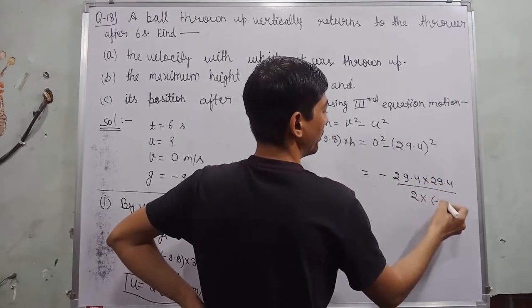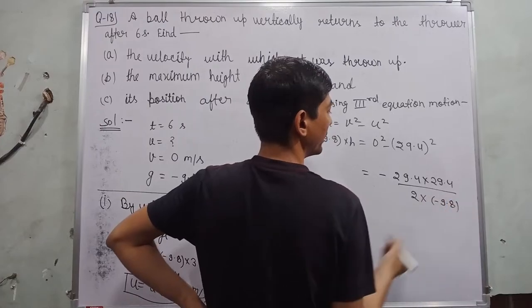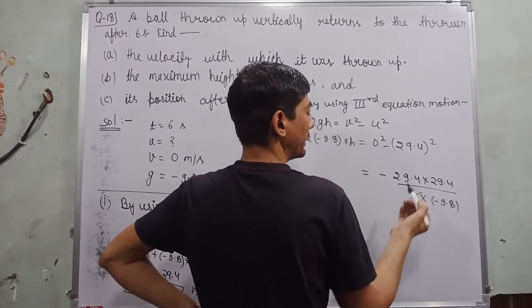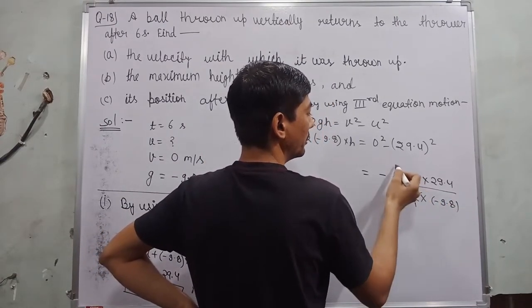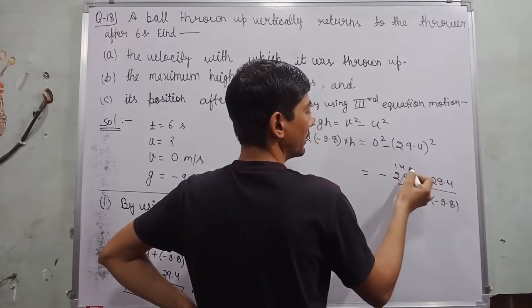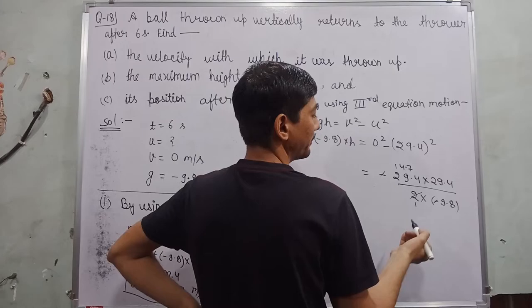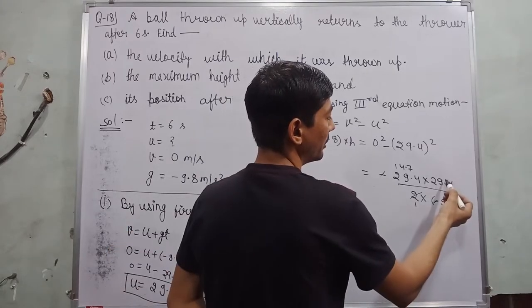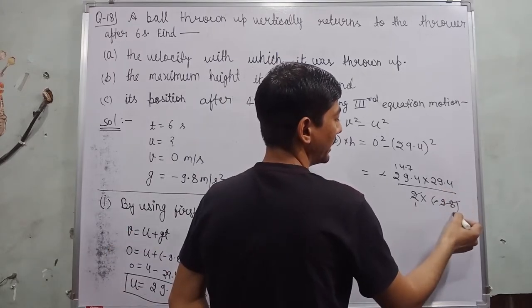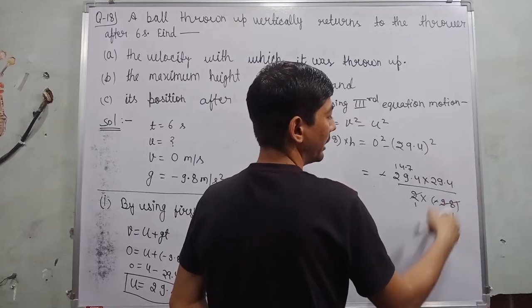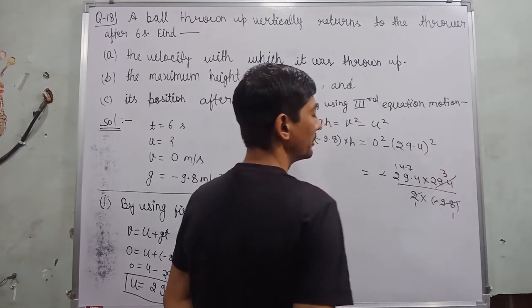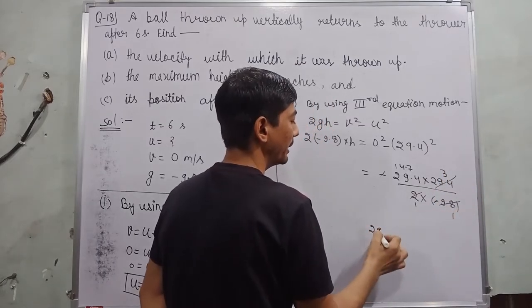over 2 into minus 9.8. So I cancel out 202 202 202 248 274 and this minus sign cancel out by this minus sign. This 9.8 cancel out by it by three times, 9.8 on the one and three. How it can be divided like this: 29.4